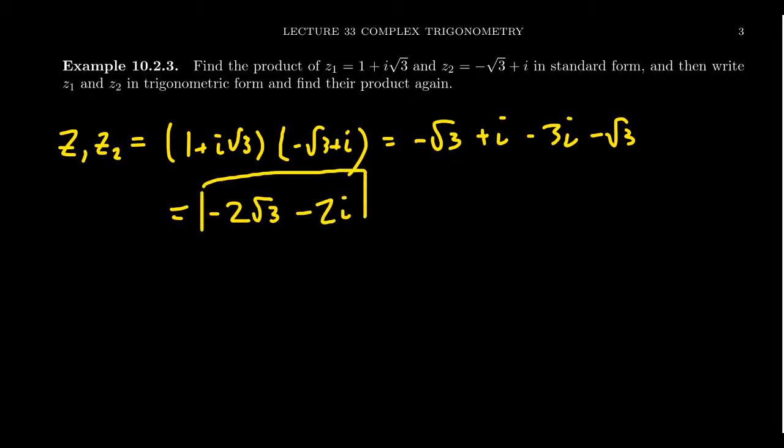and that honestly wasn't so bad. I mean, basic foil method, not the worst thing in the world. What would happen if we wanted to compute the product using the polar form? Well, if that's the case, we have to convert these things first over to the polar form. So let's think about that for a second.